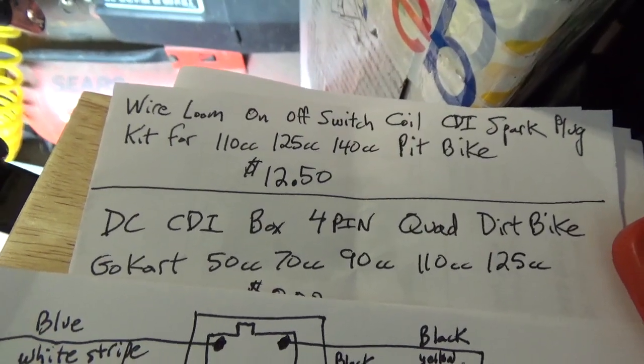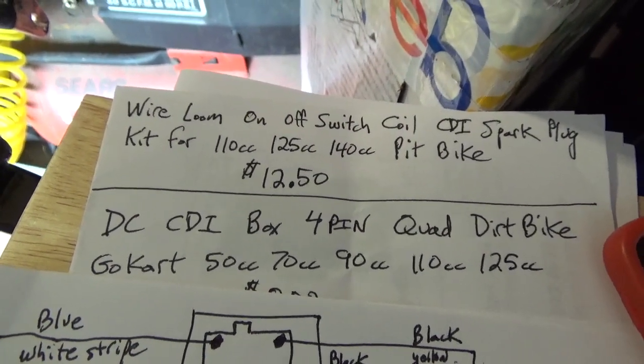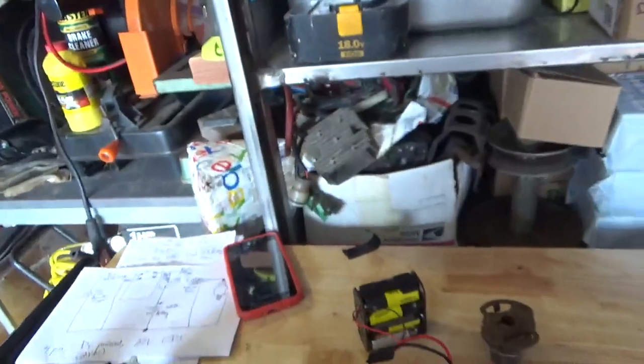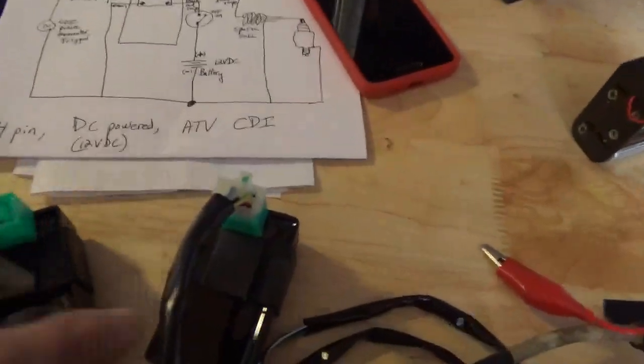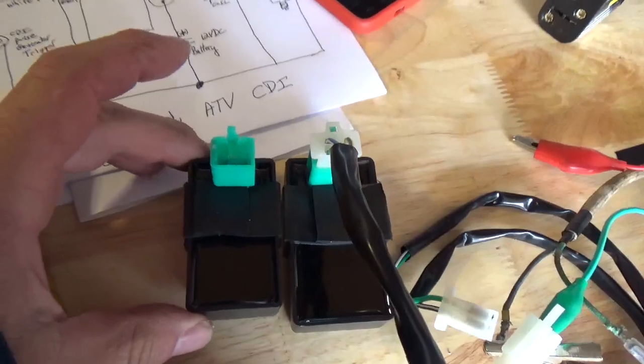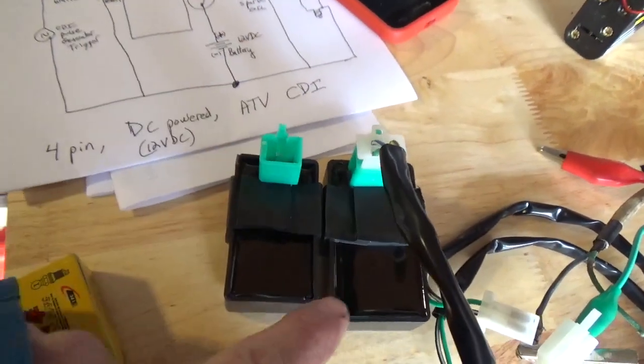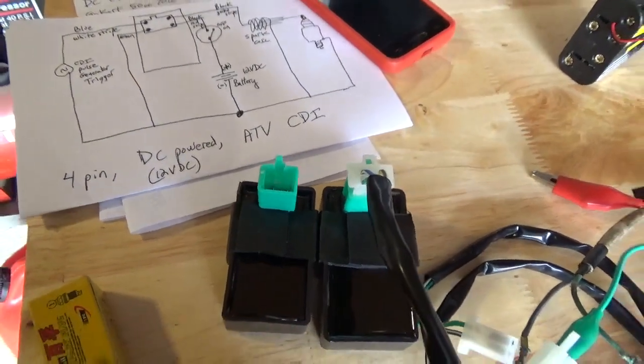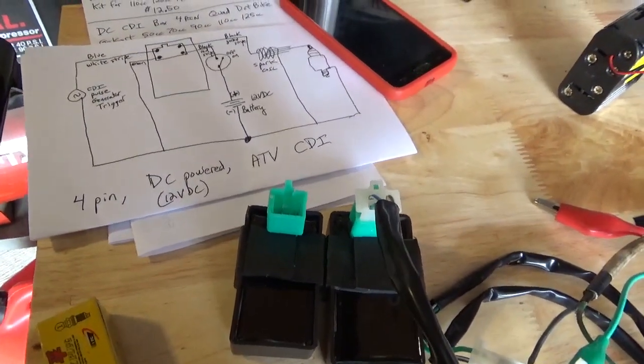The second search you want to do is DC CDI box 4-pin for a quad pit bike go-kart 70cc 50cc 90cc 110 125cc. So that's your second search and what you'll get is this CDI box right there. I'm just putting the two of them next to each other and you notice how the DC CDI box is so much bigger than the AC one.